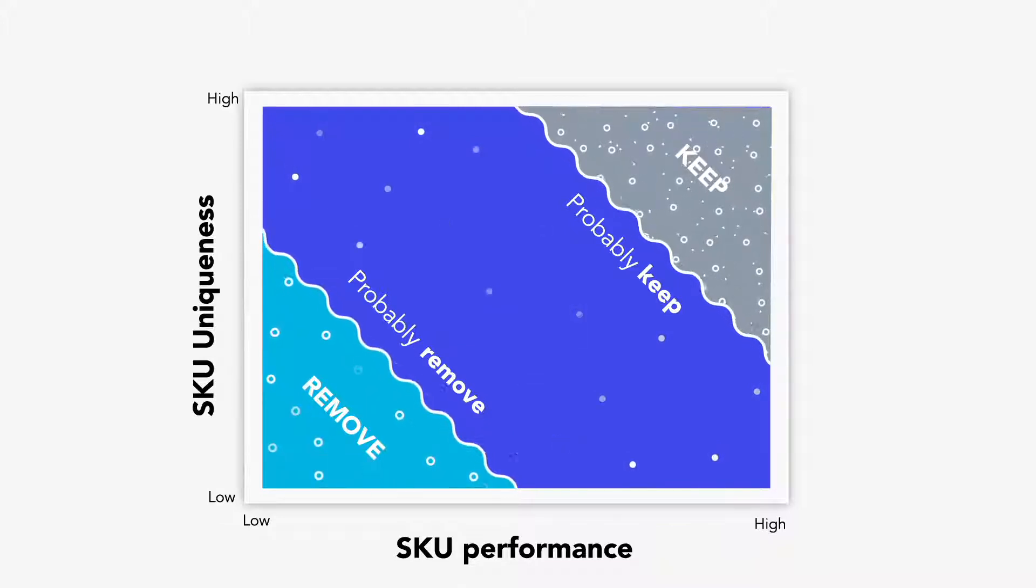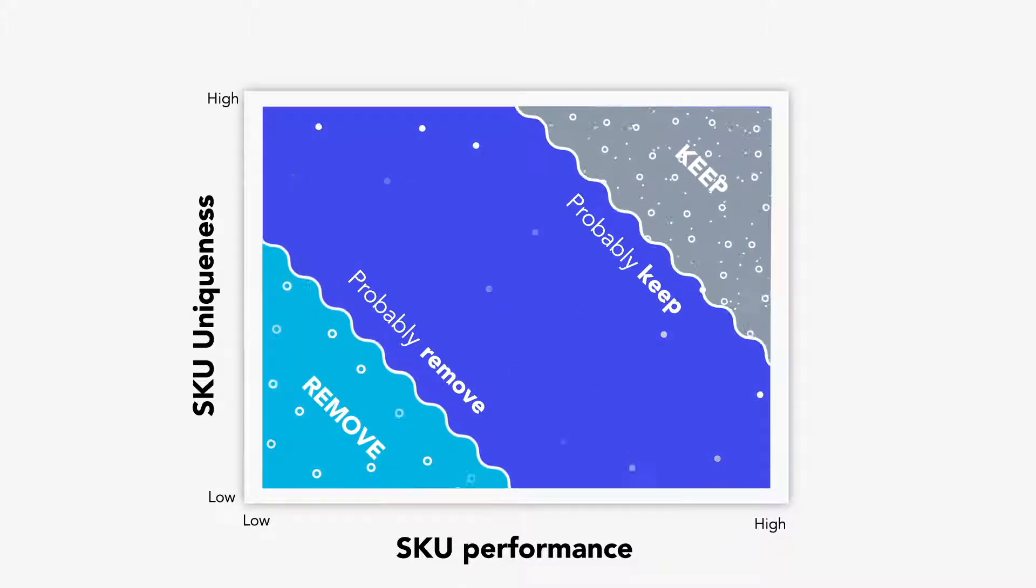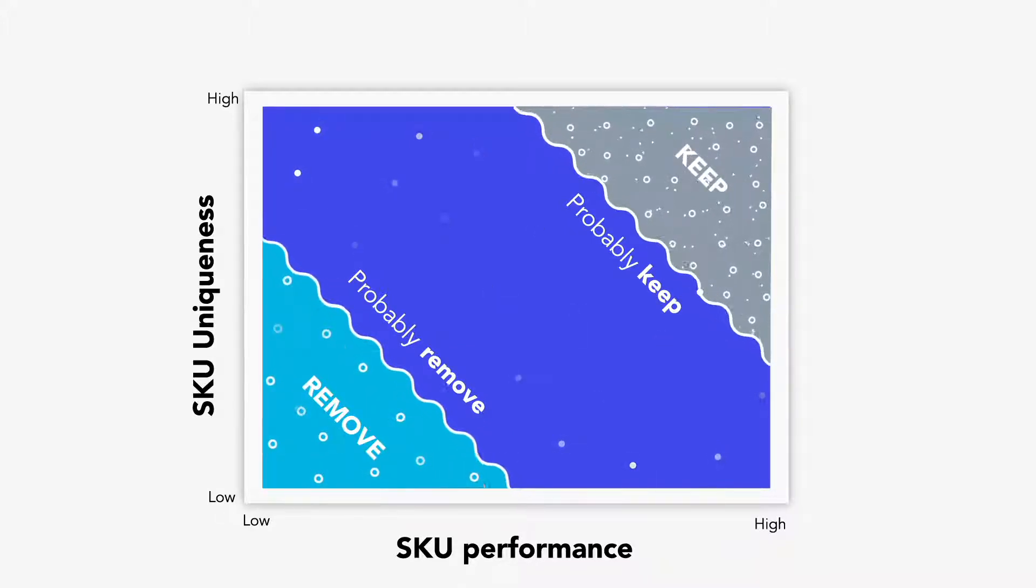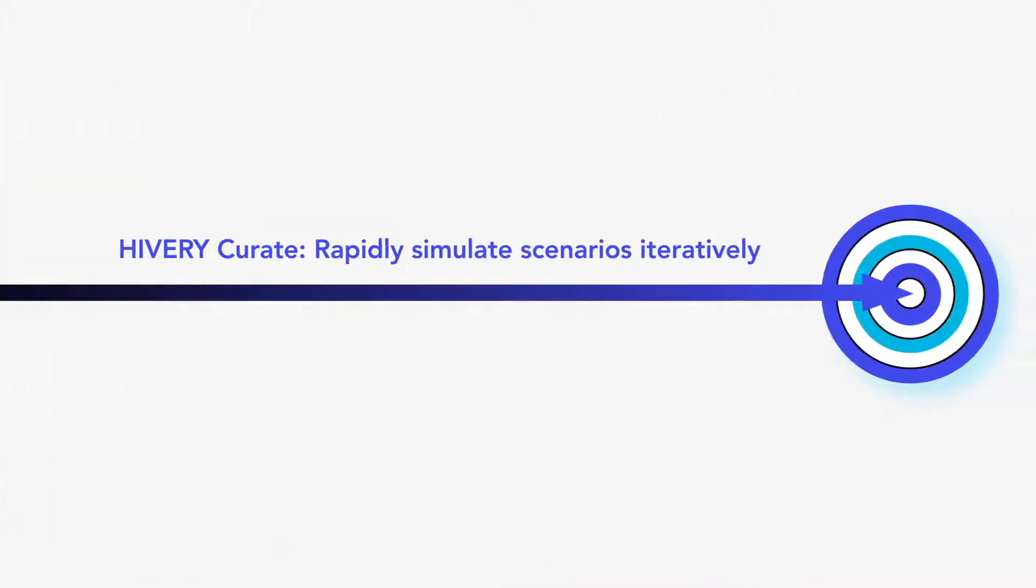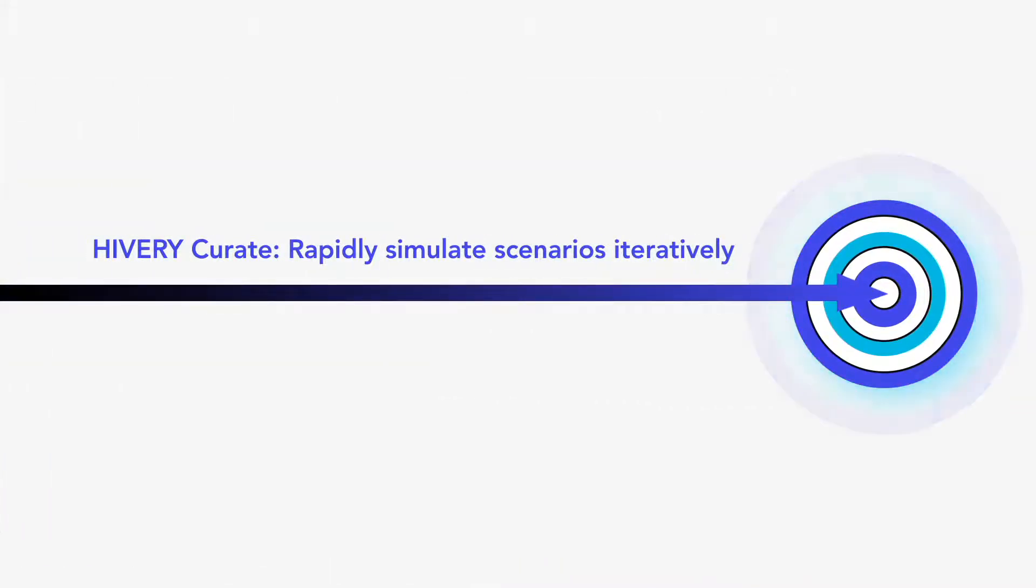Every SKU assortment decision you make needs to be quantified to ensure you execute on the right strategy. Hivory Curate allows you to create individual assortment strategies and quantify the impact of those strategies, quickly and with no technical expertise required. Here's how it works.